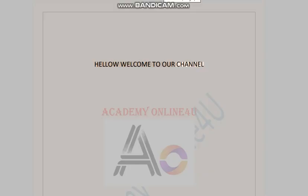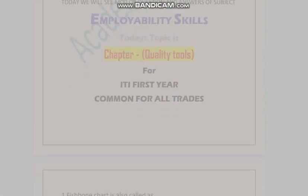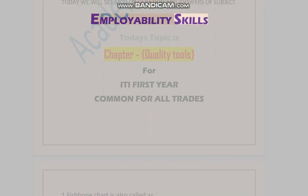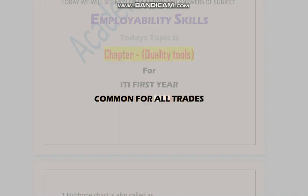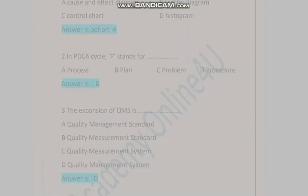Hello, welcome to our channel Academy Online. Today we will see MCQ — questions and answers of the subject employability skills. Today's topic is chapter: Quality Tools for ITI first year, common for all trades. Question one: Fishbone chart is also called as — A) cause and effect diagram, B) scatter diagram, C) control chart, D) histogram. Answer is option A.